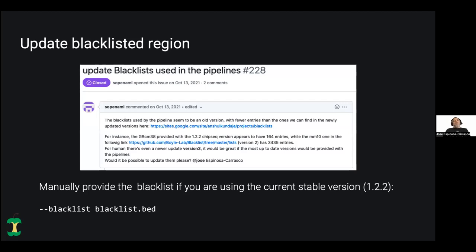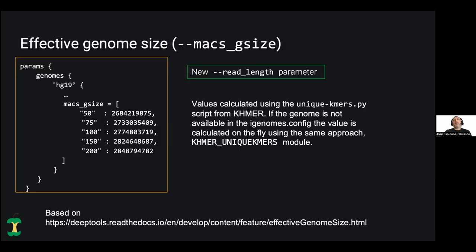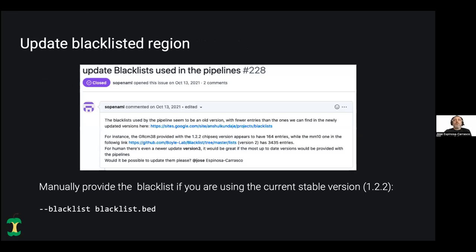This is just to show the blacklisted regions update. The issue is closed because it has already been implemented. I want to throw a warning: if you are still using version 1.2, you probably need to update the blacklist in case you are using one of the genomes where these lists are available, using the blacklist parameter of the pipeline. If you are using the development version, you don't need to worry about this.